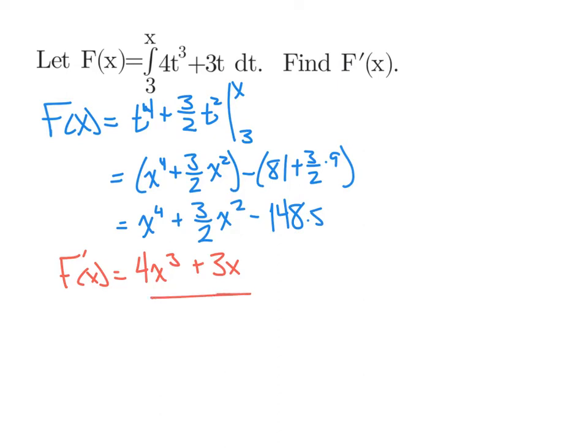And now, when we take the derivative of this, we get 4x to the third plus 3x, and the constant will be zero. What the interesting part is, of course, this expression sure looks awfully familiar to 4t cubed plus 3t.